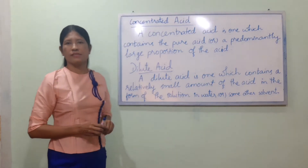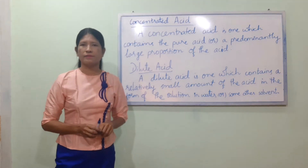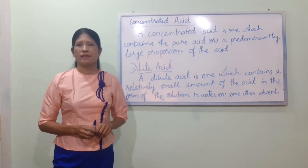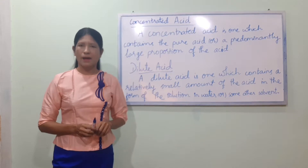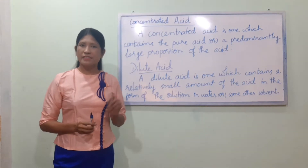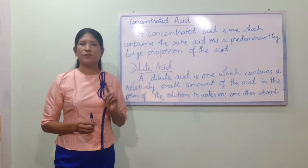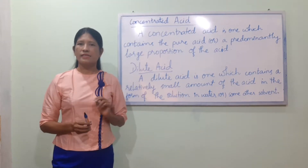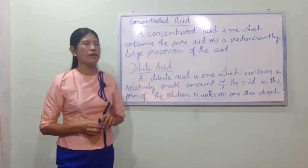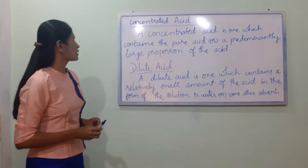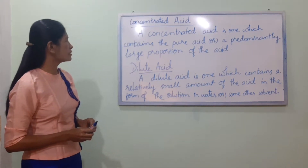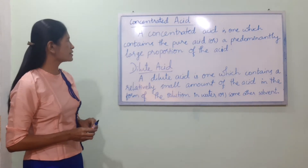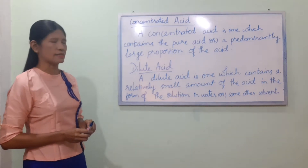Concentrated acid versus dilute acid. A concentrated acid is one which contains the pure acid or a predominantly large proportion of the acid.